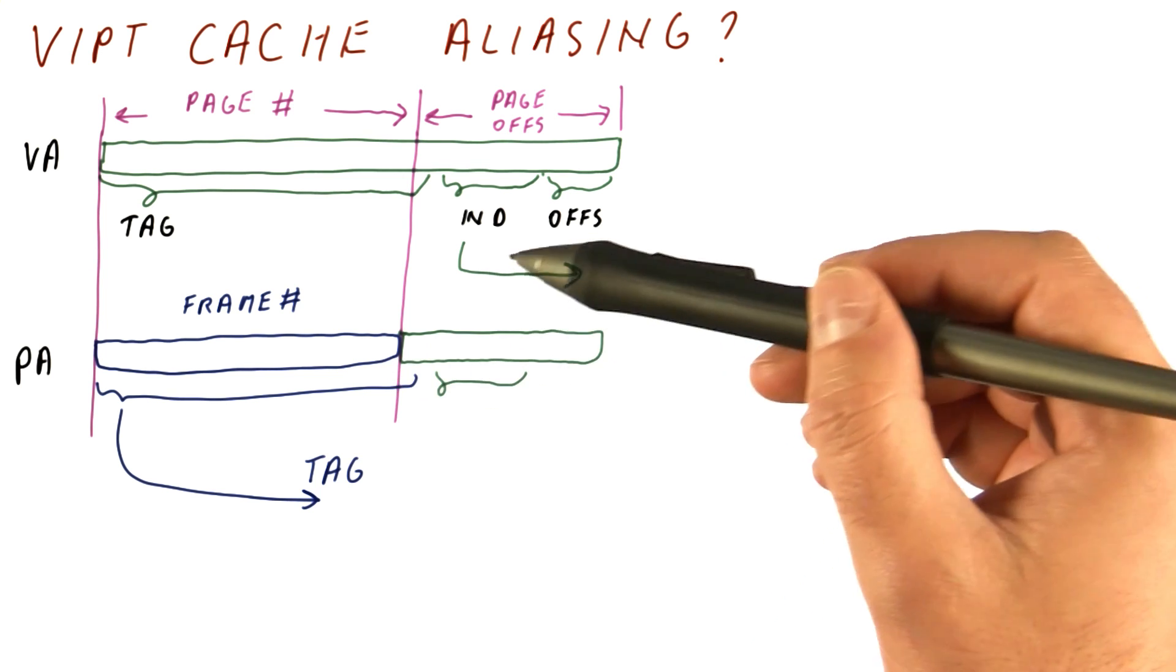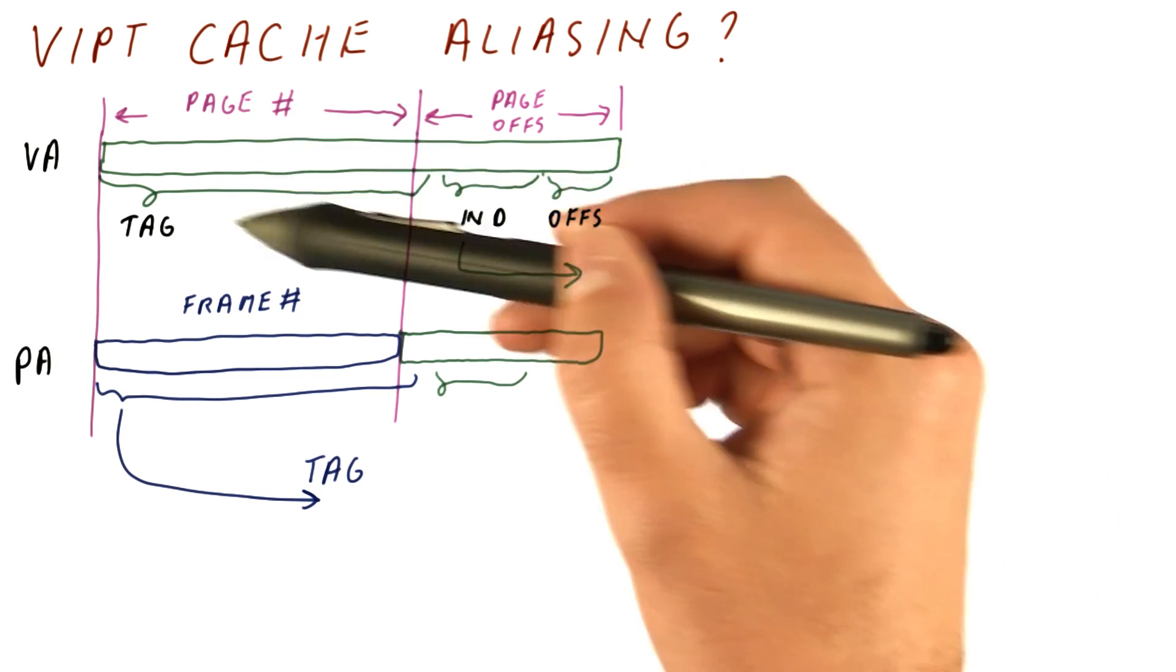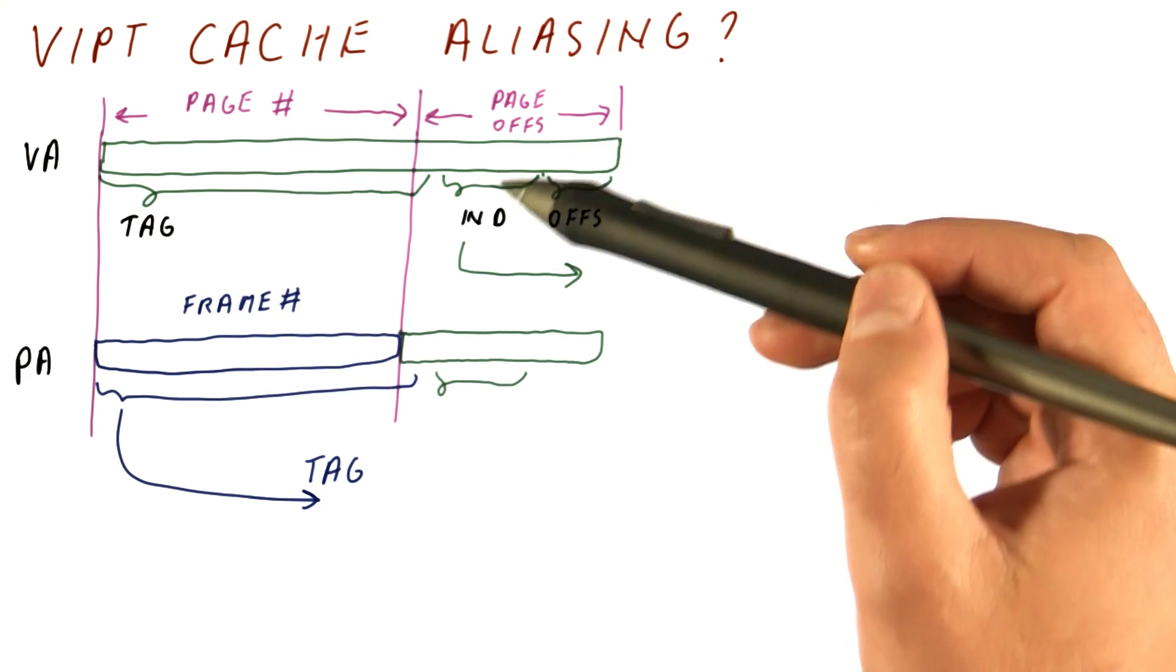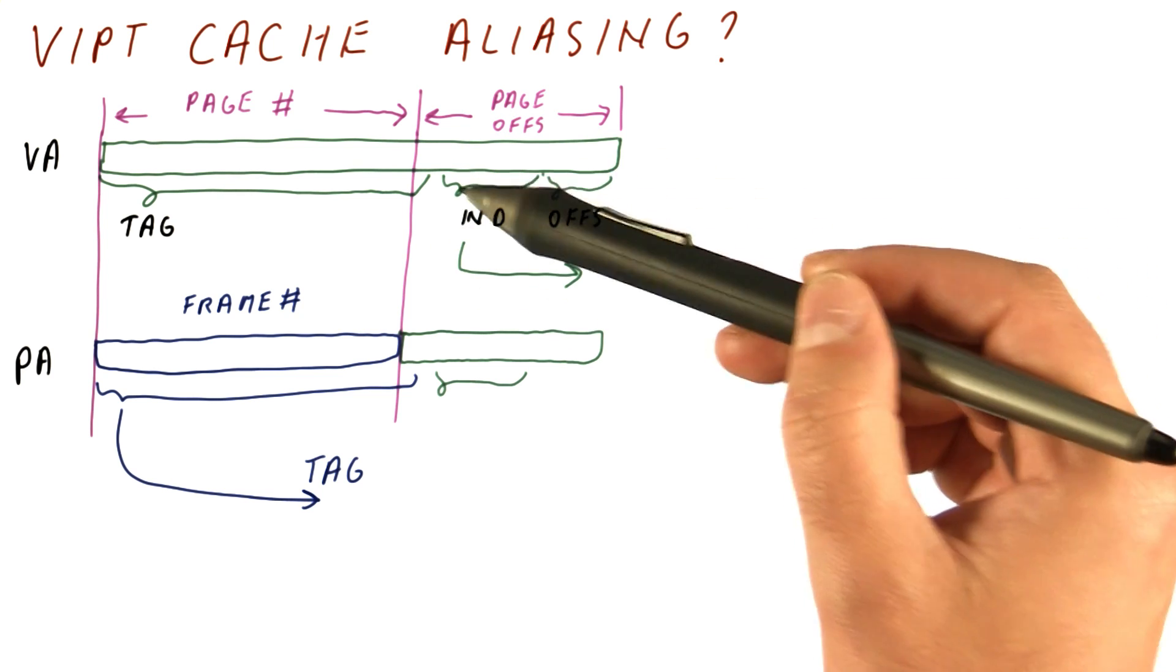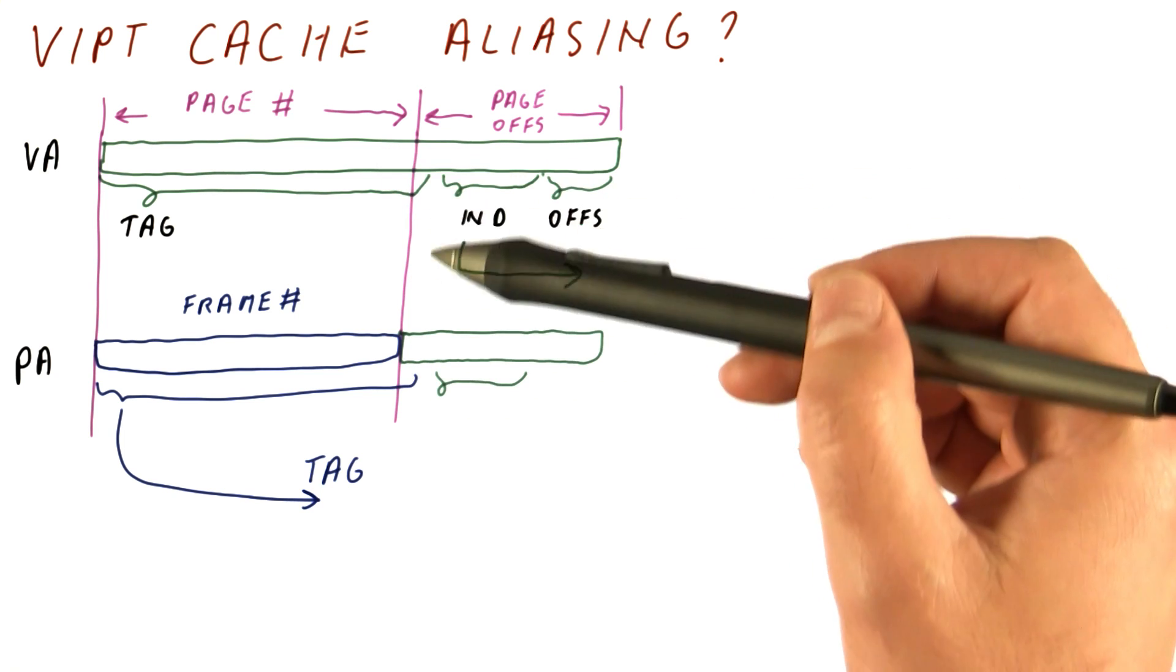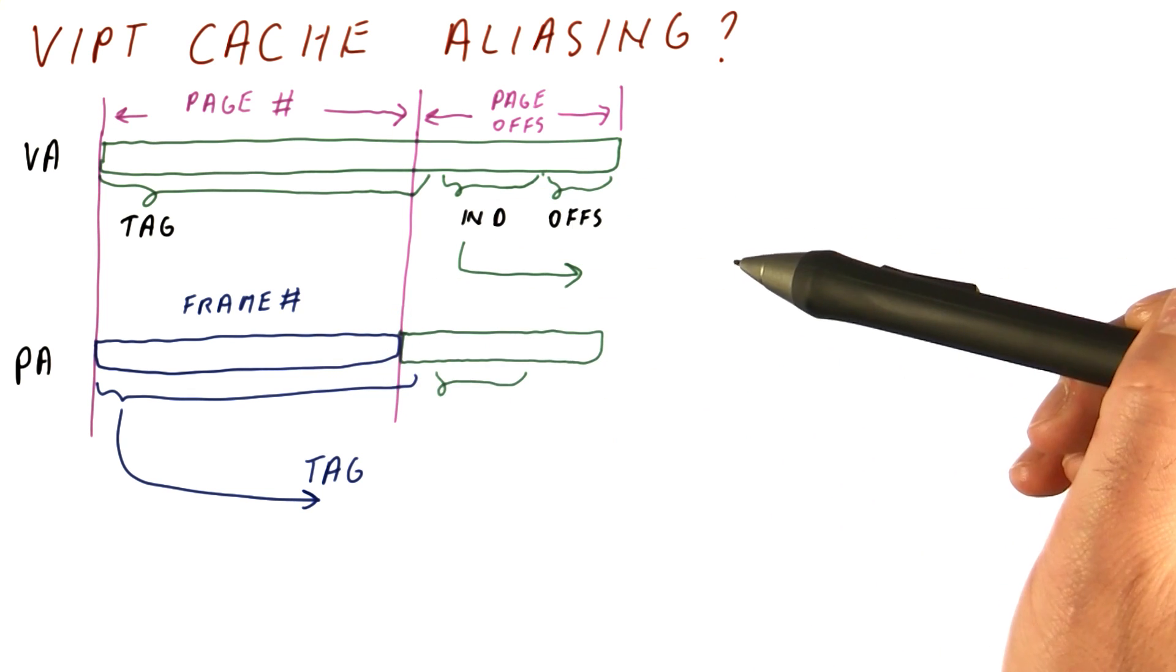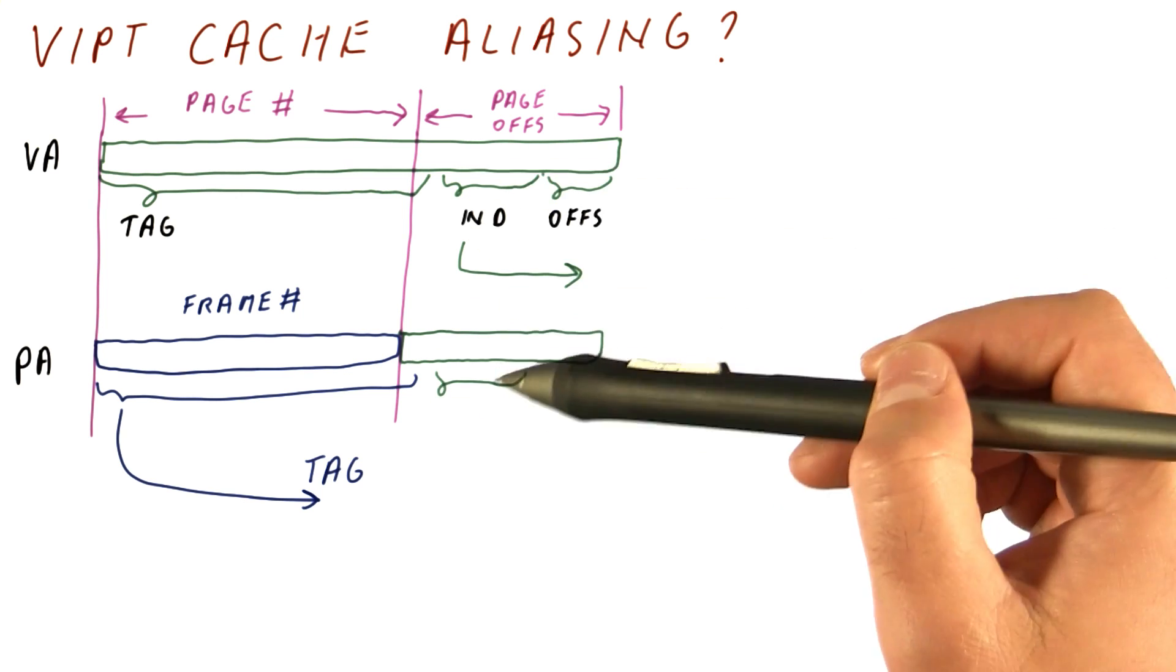How is there no aliasing? Because the virtual pages that have different page numbers that map to the same frame number can only differ in the page number, but they have to have the same offsets for the same data. And because only the offset matters for the index if the index is low enough here, what happens is pretty much all of the data that can possibly be in the same place in the physical memory has to be in the same set because the index is determined only from the part that has to be the same.